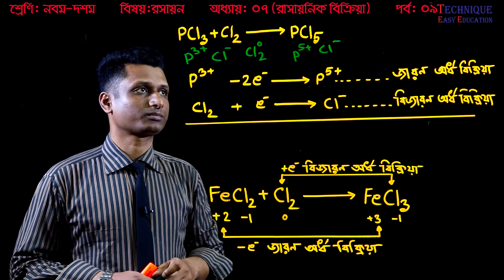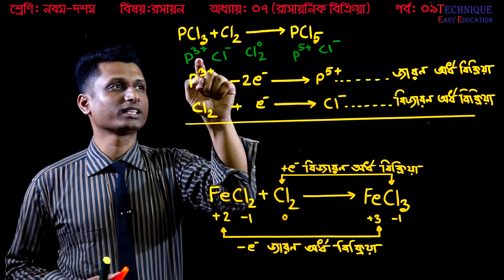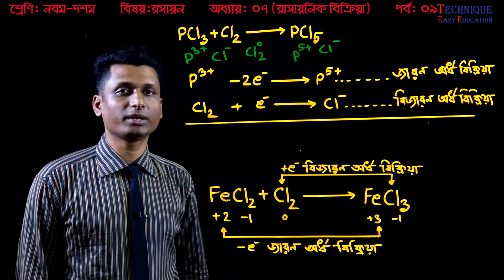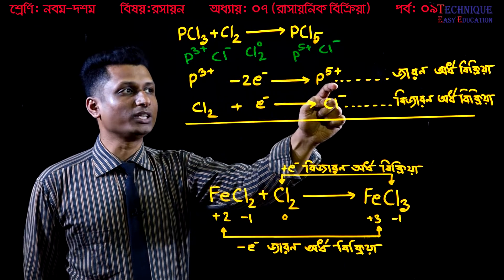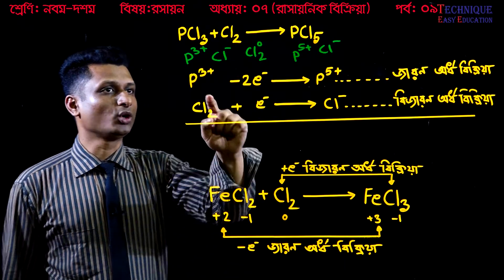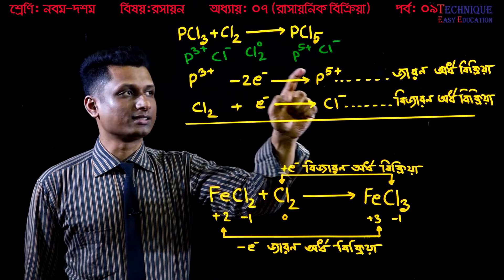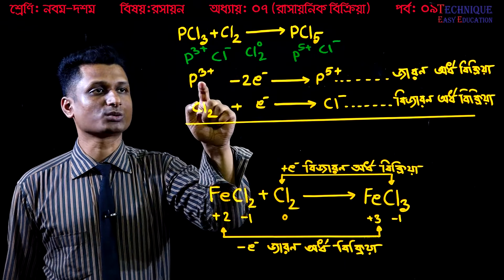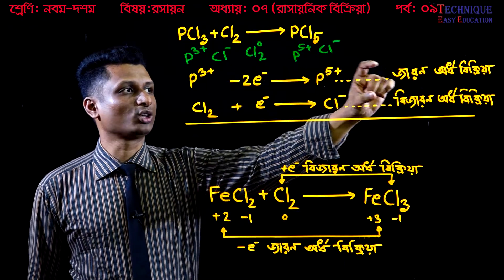So we are going to write here. Phosphorus is 3 plus, and phosphorus is 5 plus. We are converting phosphorus from plus 3 to plus 5, which involves 2 electrons. This is how to convert the phosphorus — it loses 2 electrons.